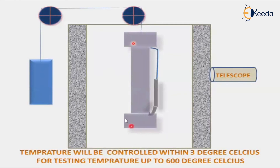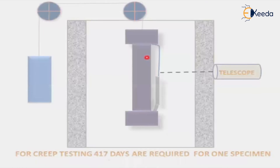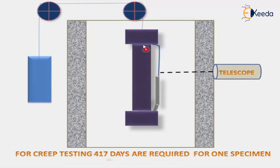The temperature applied must be controlled within three degrees Celsius for testing temperatures up to 600 degrees Celsius. This control is very, very important — if you are unable to control the temperature, the test cannot be done. The telescope is positioned to view the specimen in the proper direction. As I said, creep testing requires approximately 17 days as a minimum — this is a rough approximation concluded after many experiments by various scientists.